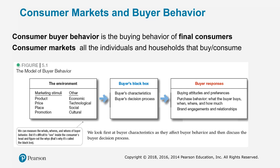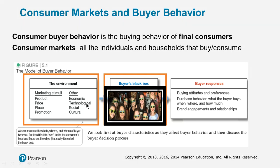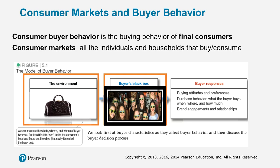There is a model for consumer buying behavior, and what this model states is that there are three steps to it. The main step is the buyer's black box — the characteristics and buying decision process of any particular buyer. How do you get into that black box of this young executive who needs a purse but is trying to decide which one they want? First, you try to understand their environment. You're going to stimulate them through placing your four P's: your product, your price, your place, and your promotions. But there are other things impacting that black box — where they are economically, how they interact with technology, their social status, and their cultural needs.